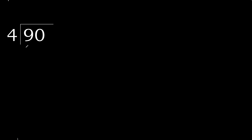90 divided by 4. 9 is not less, therefore start with 9. 4 multiplied by which number is nearest to 90 but not greater? 4 multiplied by 3 is 12 — 12 is greater. 4 multiplied by 2 is 8 — 8 is not greater.